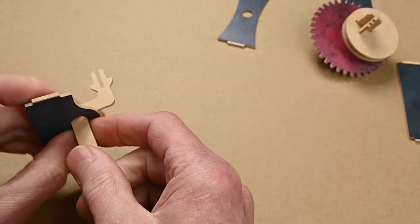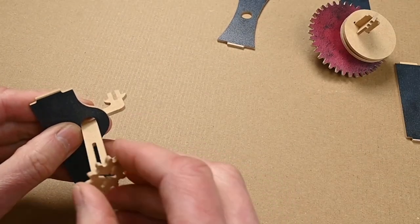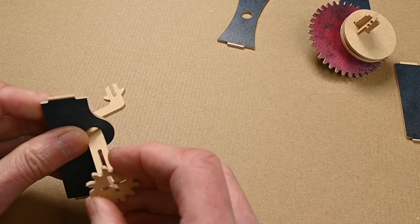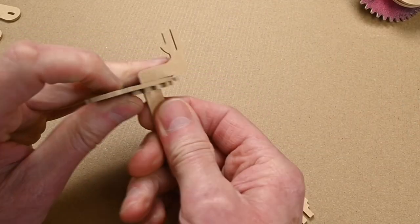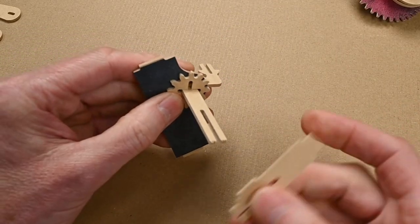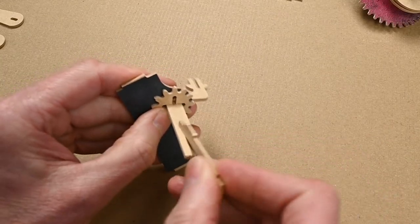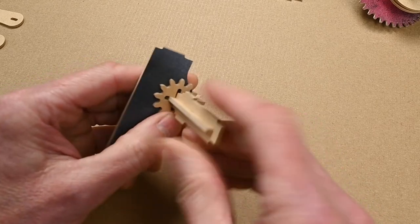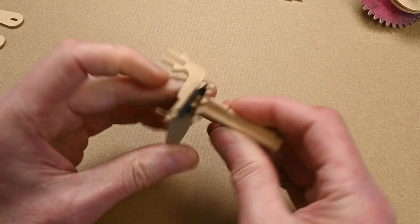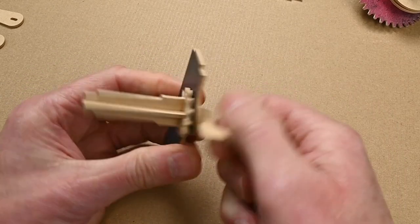That's going to go through there and then that small gear goes on there. And then this location piece goes in there. Okay so I've now got a handle ready to go.